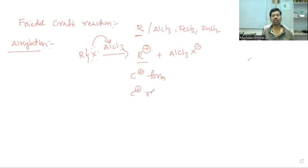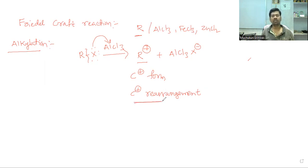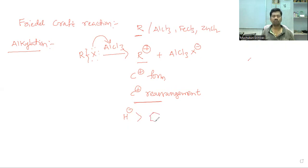It is important to know the rearrangement of carbocations. Carbocations rearrange to become more stable. The rearrangement involves hydride shift (H shift) or phenyl group migration. The stability order is: tertiary carbocation is most stable, then secondary, then primary.